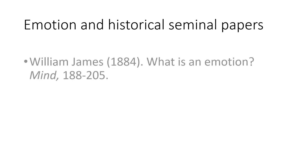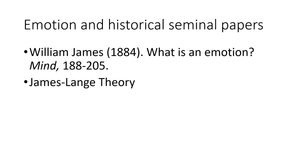Another early theory, coming after Darwin's, is by William James, which came to be known as the James-Lange theory. It was first published in the article 'What is an Emotion?' in the journal Mind in 1884. This theory was different from Darwin's in that it tried to explain what an emotion is, rather than where emotions came from evolutionarily. James started to answer the question: what is an emotion exactly, how does it start, and what causes it?